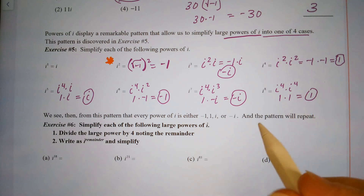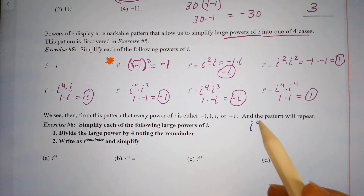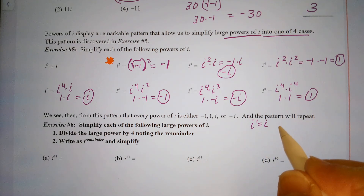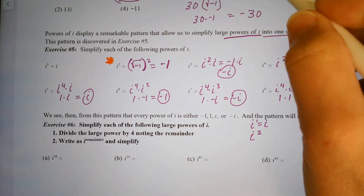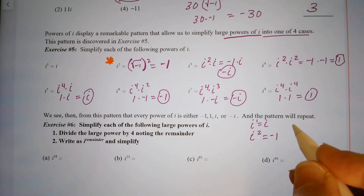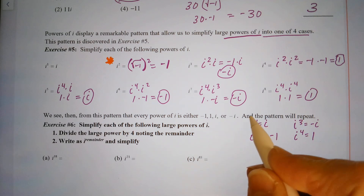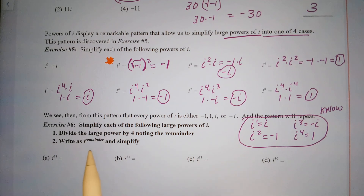What you need to memorize: i to the first is i, i squared is negative one, i to the third is negative i, and i to the fourth is equal to one. To simplify a large power of i, divide the large power by 4, note the remainder, write it as i to that remainder, and simplify.